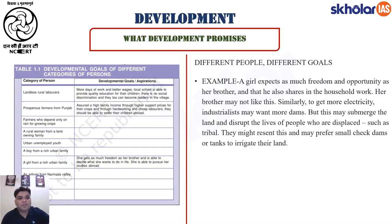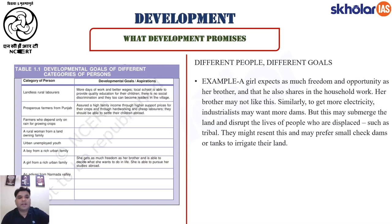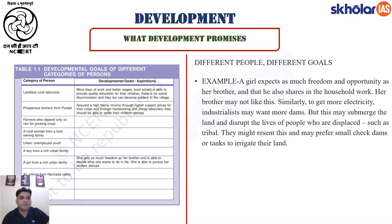What does development promise? In a table, you have developmental goals of different categories of persons. For landless rural laborers, their aspirations are: more days of work and better wages; local schools able to provide quality education for their children; no social discrimination so they too can become leaders in the village. So some sort of political independence, economic justice, and financial gain is what they aspire for.